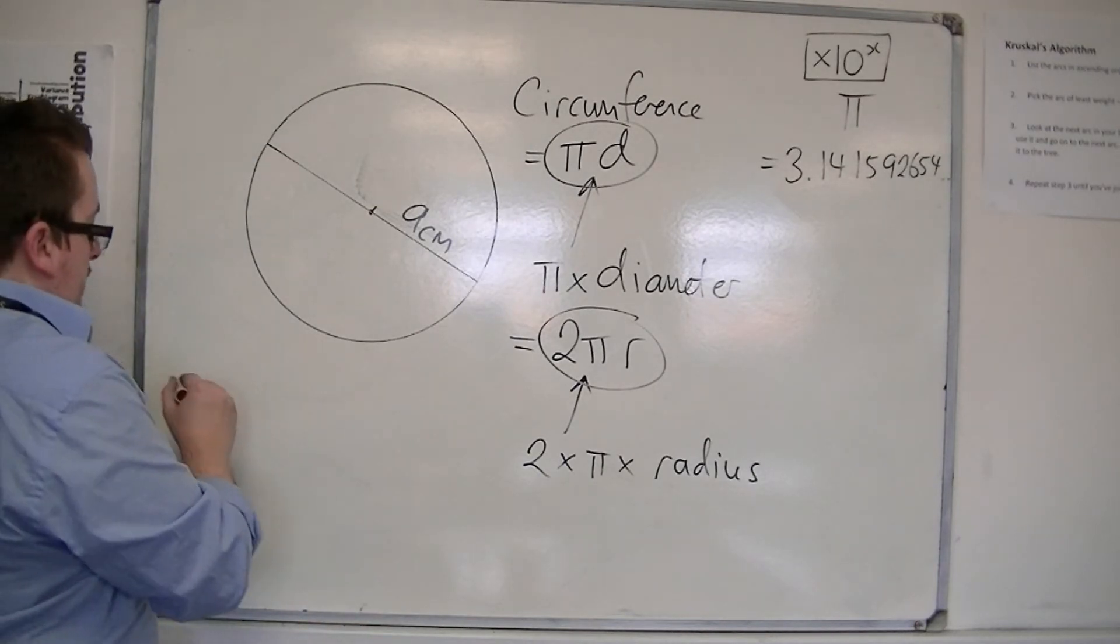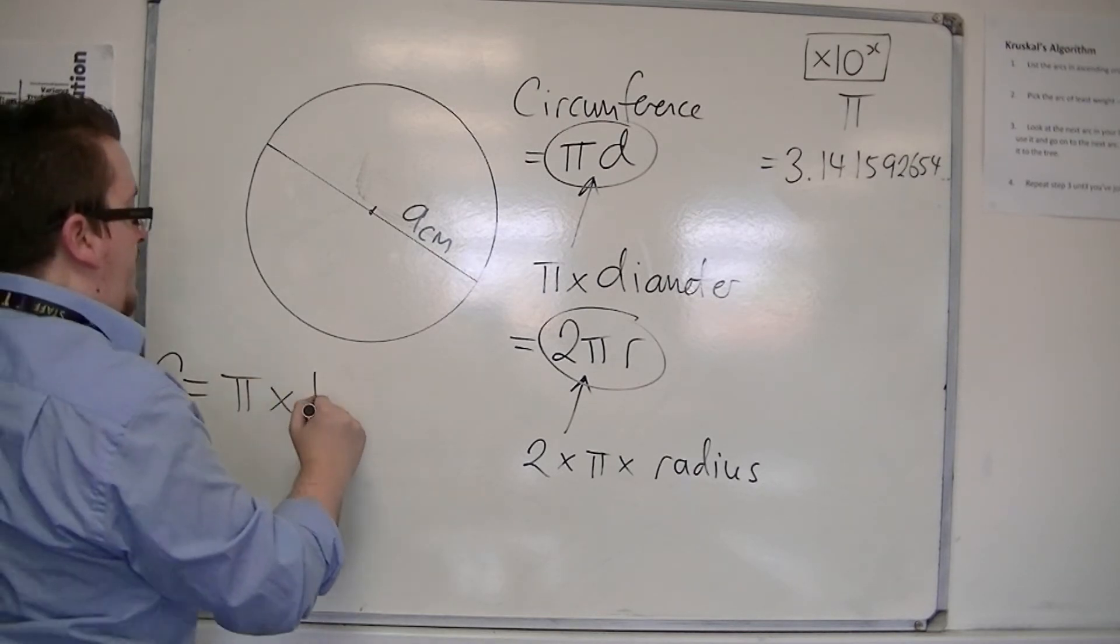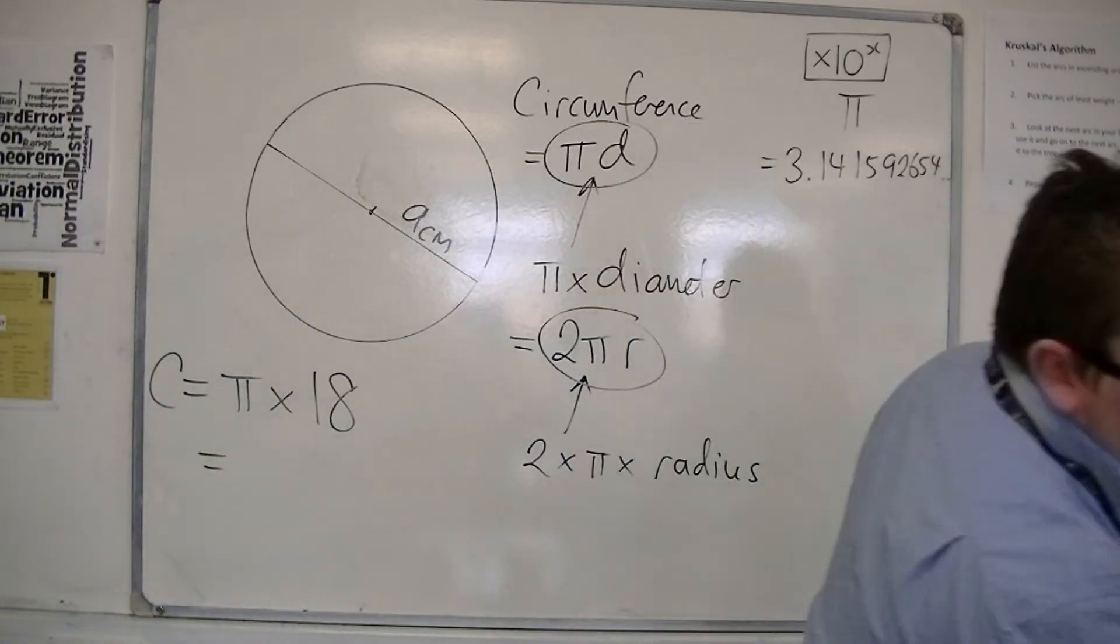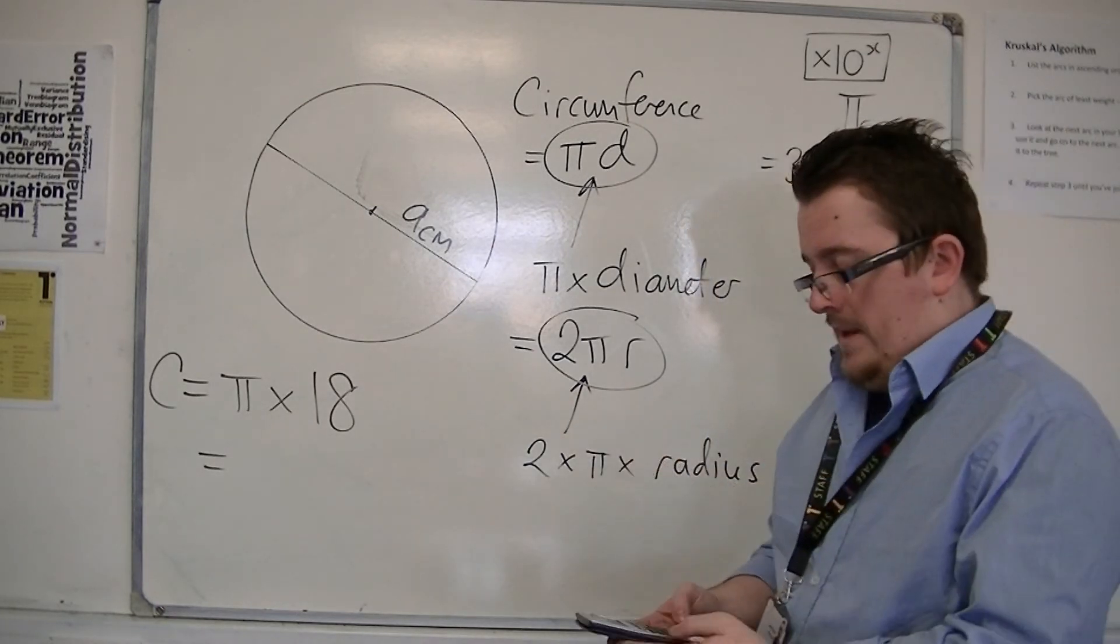So, in this case, we've got circumference is going to be pi times the diameter, which is 18 centimeters. So, on our calculators, we type in pi, then multiply it by 18.